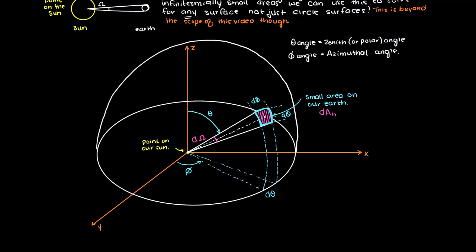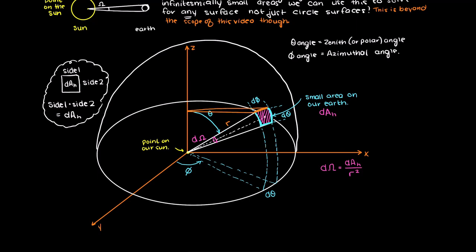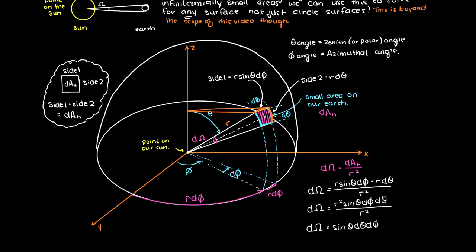The solid angle denoted by d omega for this small area is dAh over the radius squared. To get the areas of dAh we need to find the lengths of these two sides, let's call them side 1 and side 2. Side 1 can be found by tracing its two points back to the z-axis, therefore side 1 is going to be r sin theta d phi, whereas side 2 denoted here is going to be r d theta. Plugging in these newly found values to our infinitesimally small omega, our solid angle, we get that d omega is equal to sin theta d theta times d phi.